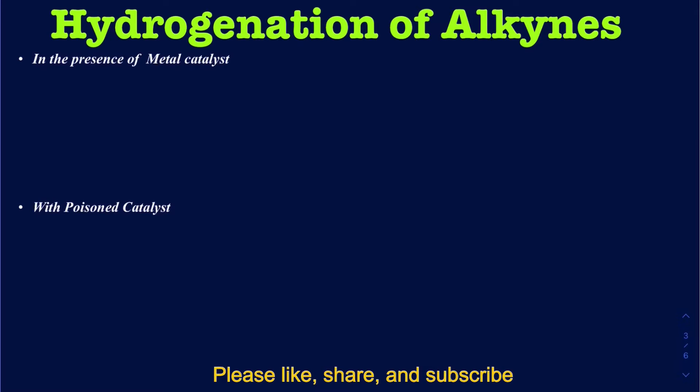In this video we're going to talk about how to do the reduction of alkynes three different ways, and it's extremely important to understand the difference among those three methods. Let's talk about hydrogenation in the presence of a metal catalyst. Suppose you have an alkyne — I'll take an example of 2-butyne. If you do this reduction in the presence of hydrogen and a metal catalyst, which could be nickel or platinum...